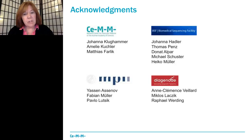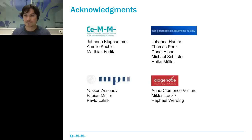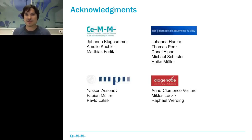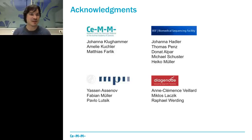Another question: what kind of tissues did you use to compare methylation patterns between different species? For the different-species project I showed, it was really a variety of tissues — brain, liver, heart, muscle, and so on. Lots of different tissues were extracted for this experiment by Johanna Kluckammer.